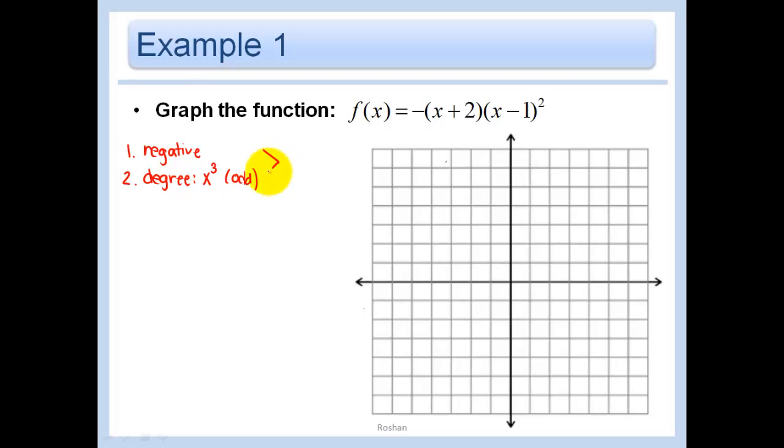So because it's negative and odd, my simplest case is just that line, right? Because it's odd and negative. So I know that the end behavior is going to look like this.